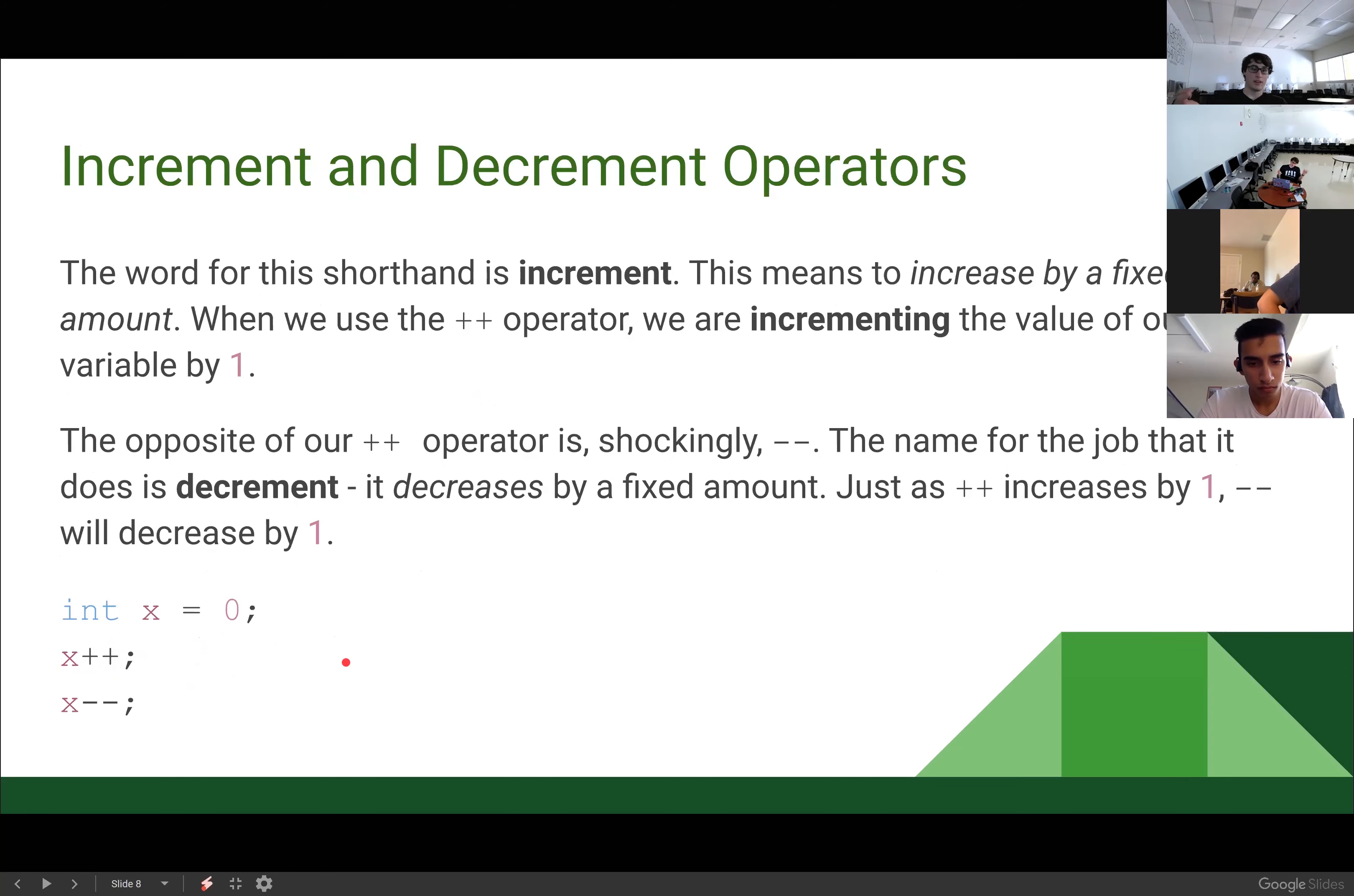So the shorthand or the word for that operator is increment. That is the increment operator. And to increment means to increase by a fixed value. So when we use that plus plus operator, we are incrementing the value of our variable by one. And the opposite of the increment operator, the plus plus operator is the minus minus operator. And it does the exact opposite thing. The name for that is decrement. It decreases by a fixed amount. And just like plus plus increases by one, minus minus will decrease by one.